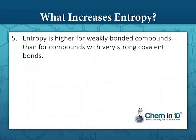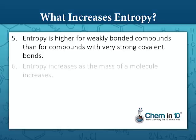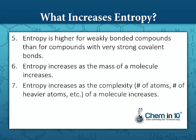Number five: entropy is higher for weakly bonded compounds than for compounds with very strong covalent bonds. And six: entropy increases as the mass of a molecule increases. Seven: entropy increases as the complexity of a molecule increases. This complexity can be in number of atoms, number of heavier atoms, etc.